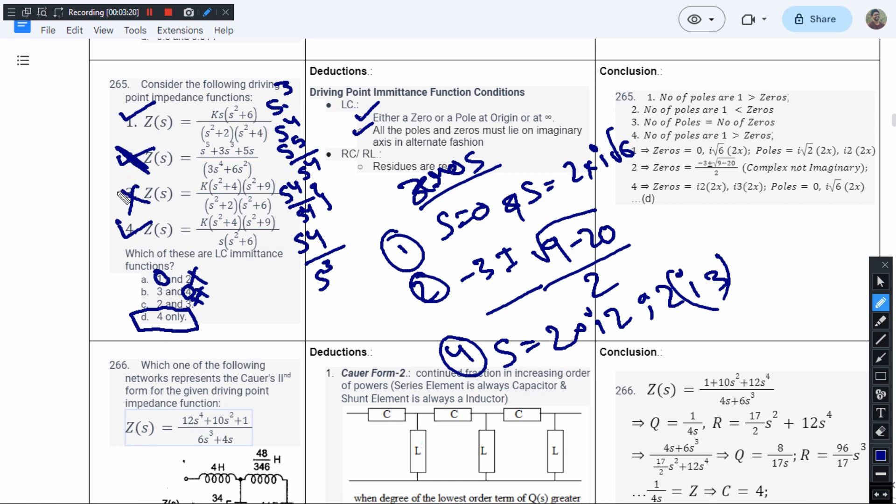...since we don't have the combination of 1 and 4 in the options, we will go with option D. So for question number 265, the correct answer is option D.